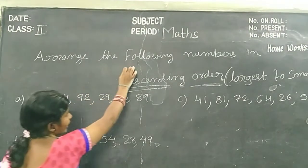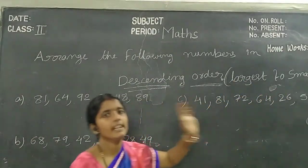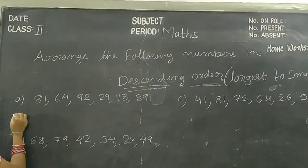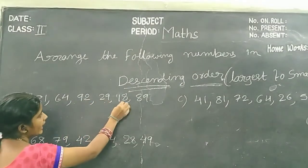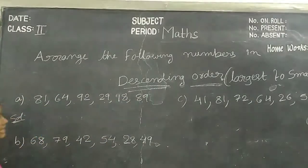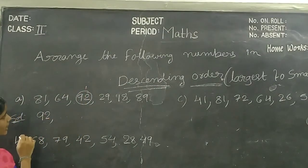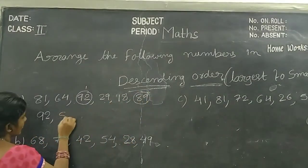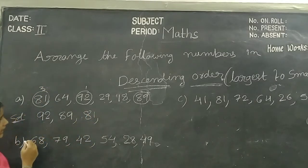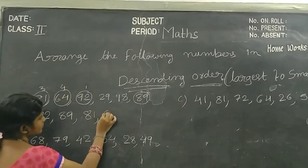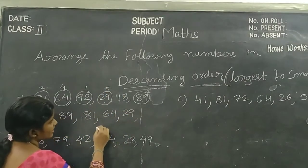Arrange the following numbers in descending order. Descending order means largest number to smallest number. See the example: 81, 64, 92, 29, 18, 89. In this example, what is the largest number, children? 92. Next number is 89. Next is 81. Next is 64. Next is 29. Next is 18.